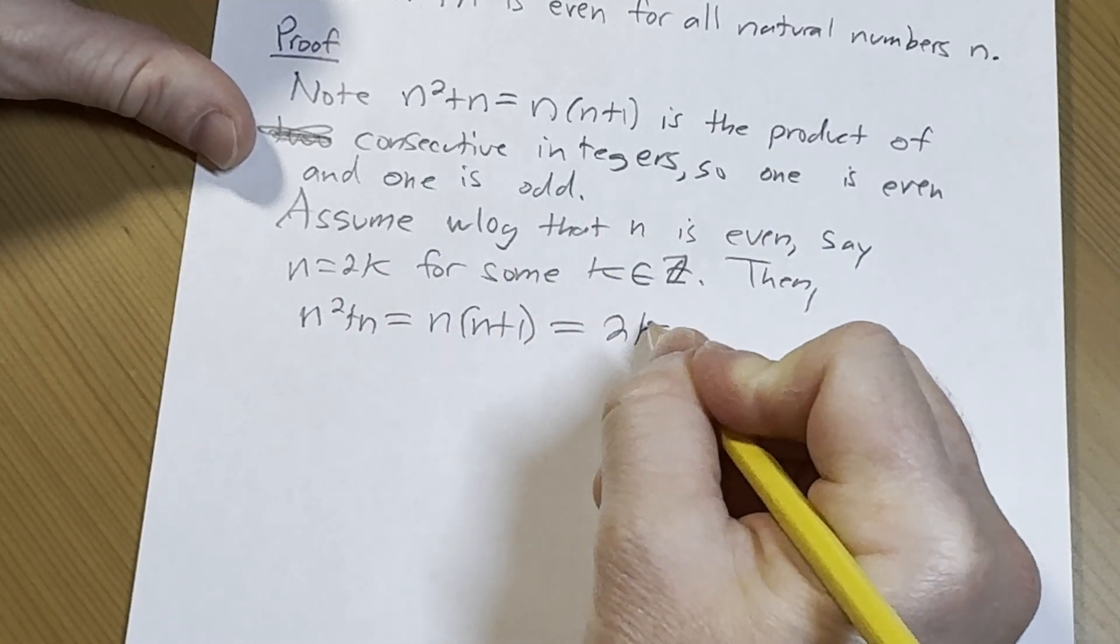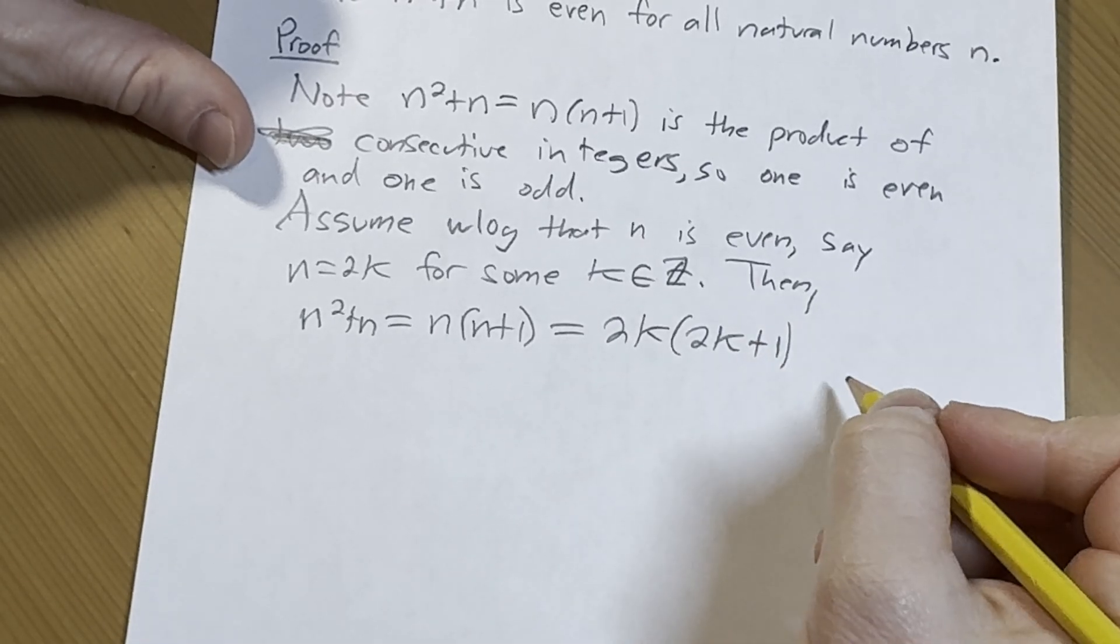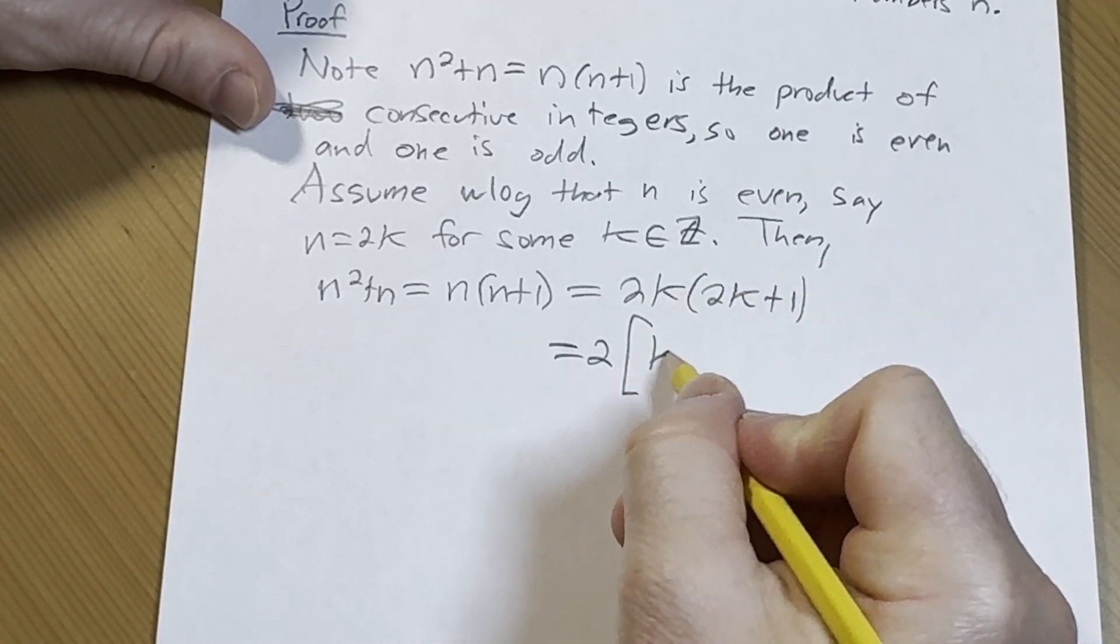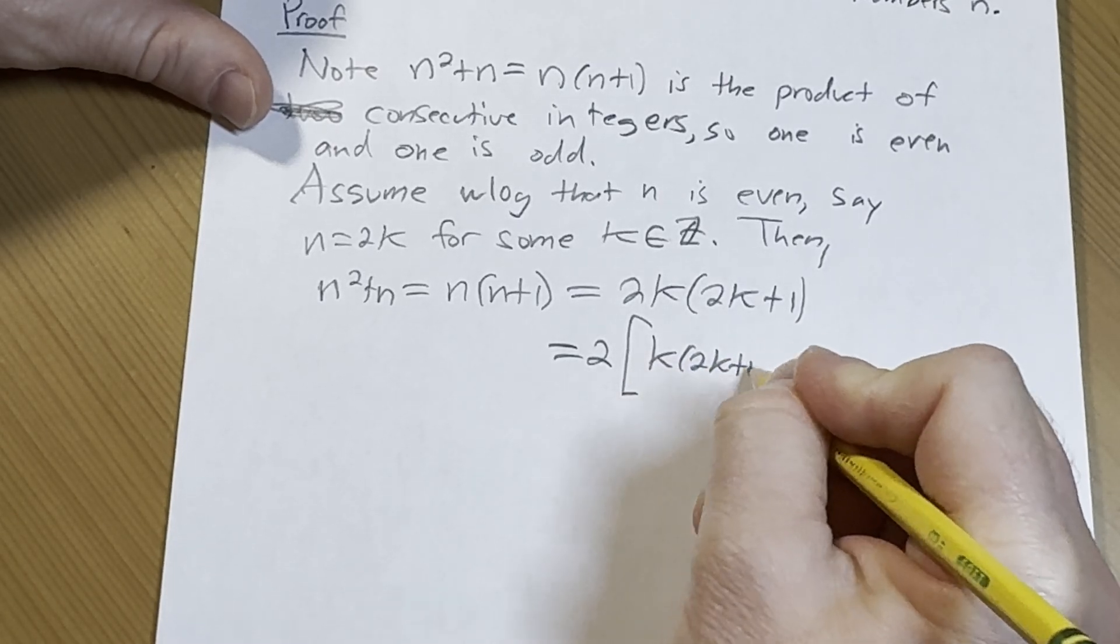So this is 2k times 2k plus 1. But this is equal to 2 times the bracket k times parentheses 2k plus 1.